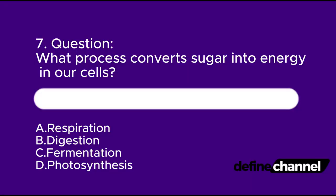Question 7. What process converts sugar into energy in our cells? A. Respiration. B. Digestion. C. Fermentation. D. Photosynthesis. Which is the correct answer?